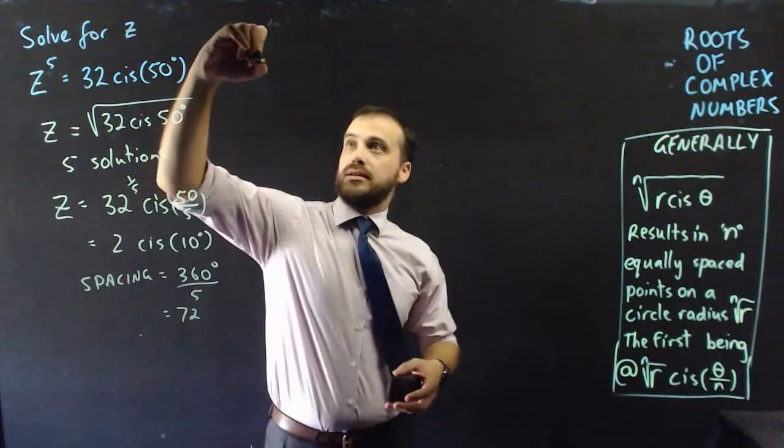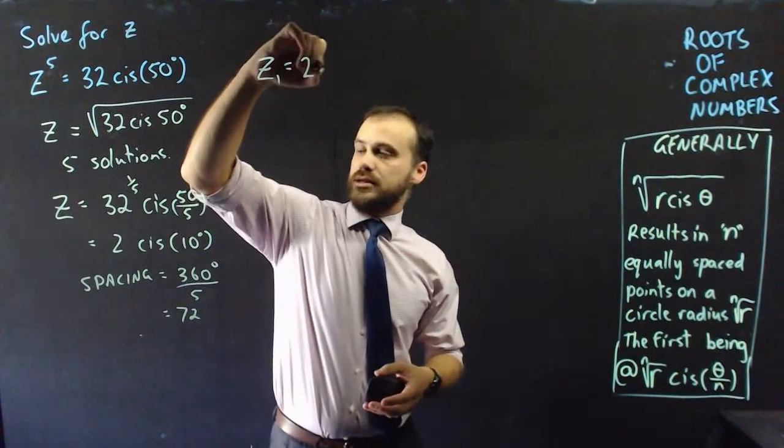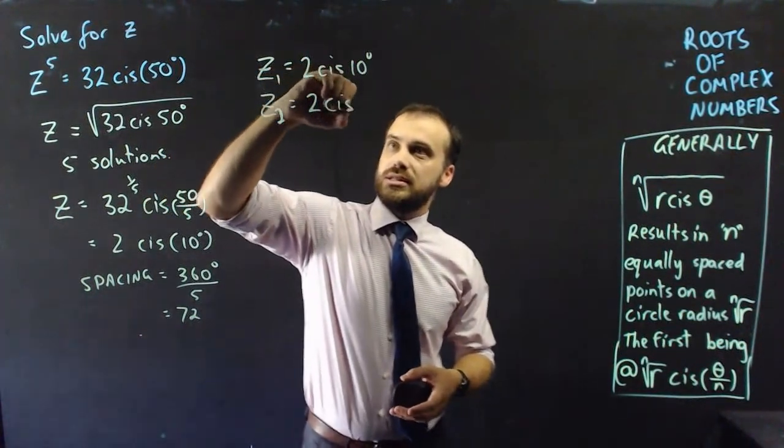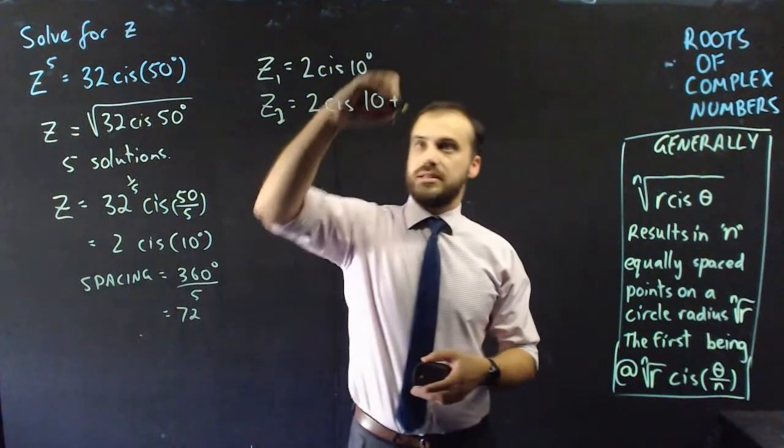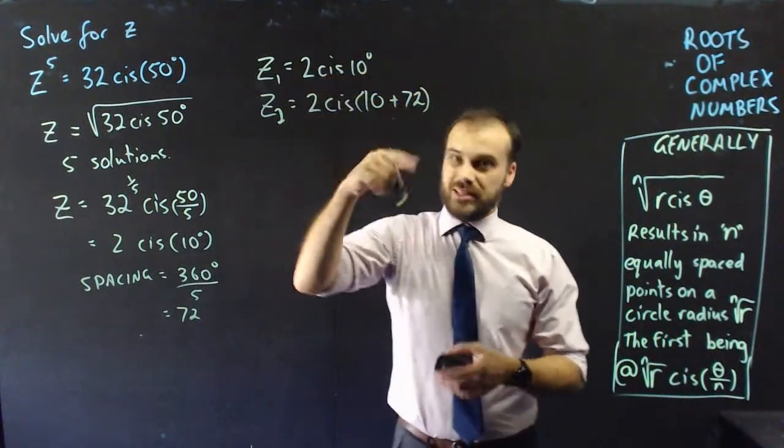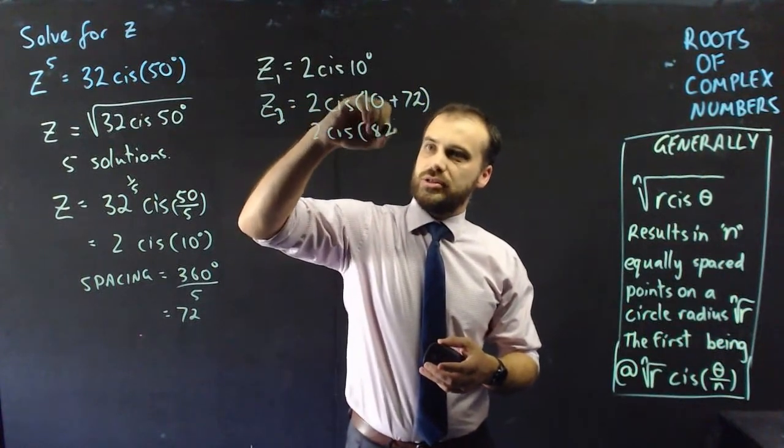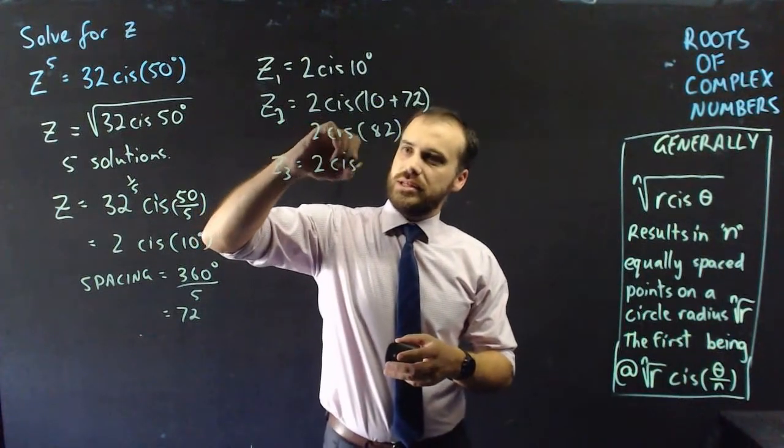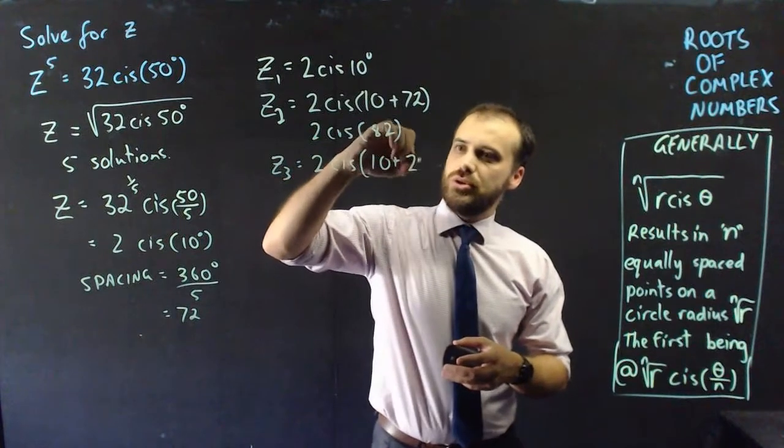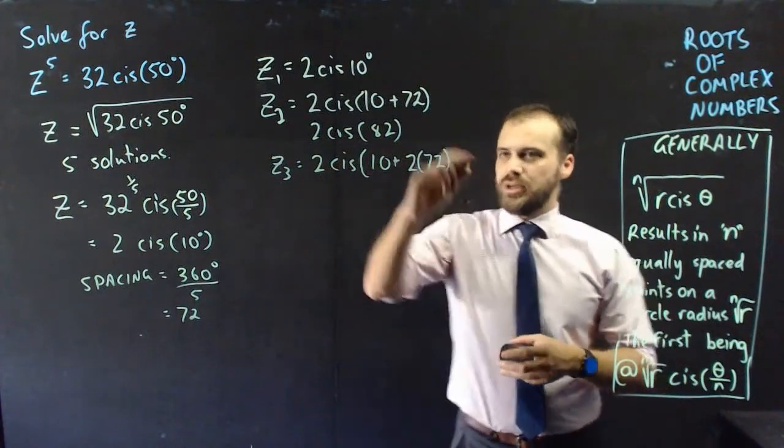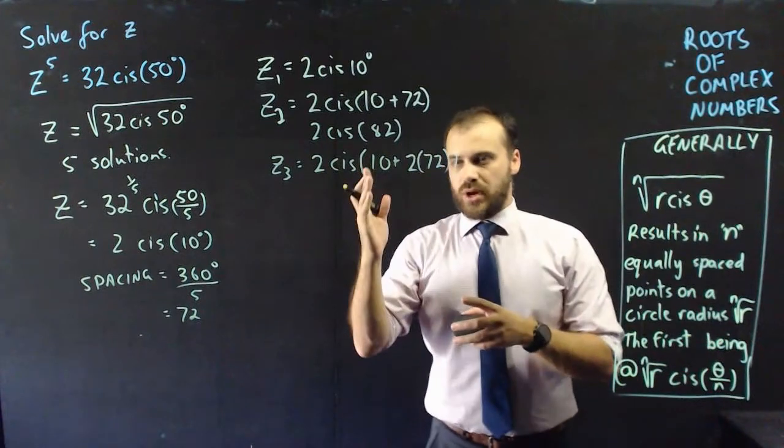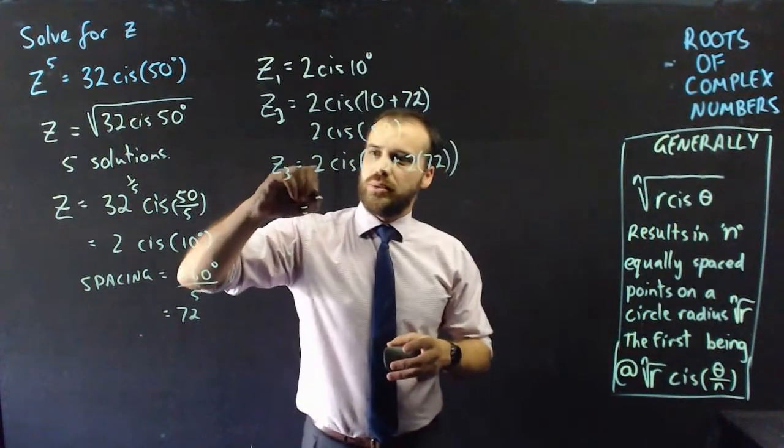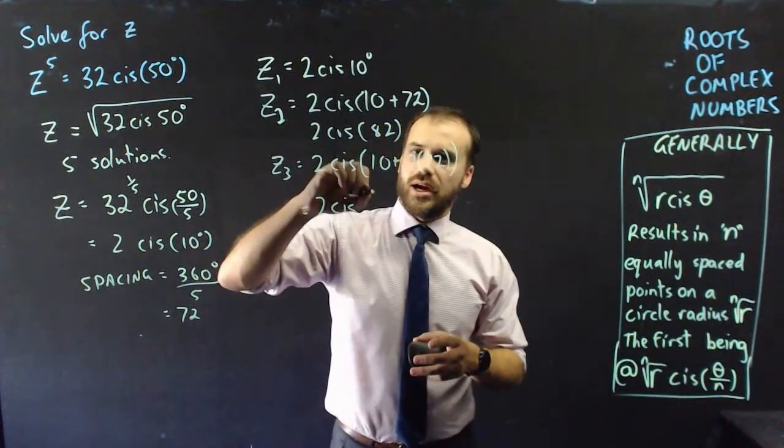I can say that z1 is exactly what this is: 2 cis 10 degrees. I can say that my second solution is 2 cis 10 degrees plus 72. That's 2 cis 82. My third solution here is going to be 2 cis 10 plus 2 times 72. Why 2 times 72? Because if it was 1 times that I'd be at 82, 2 times that I'll be at the next one which is 2 cis 144.